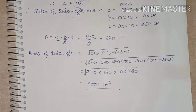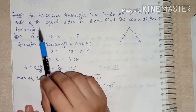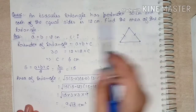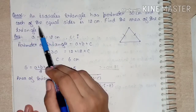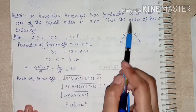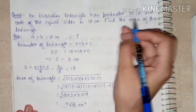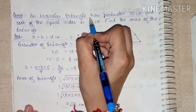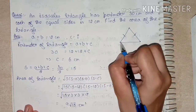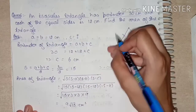Question 5 done. Now let's come to question number 6. An isosceles triangle has perimeter 30 cm and each of the equal sides is 12 cm. Find the area of the triangle. We need to find the area of a triangle whose perimeter is 30 cm. Since it's isosceles, two sides are equal at 12 cm each.